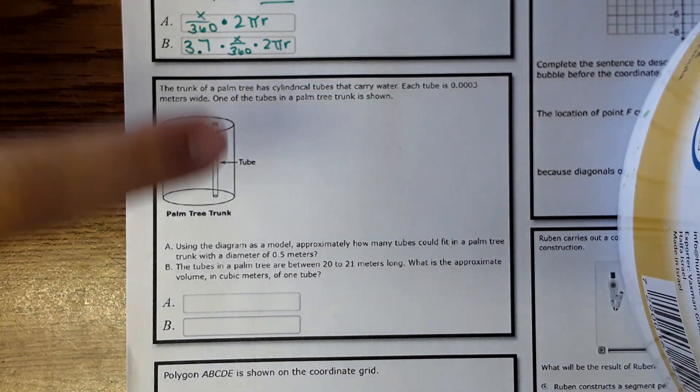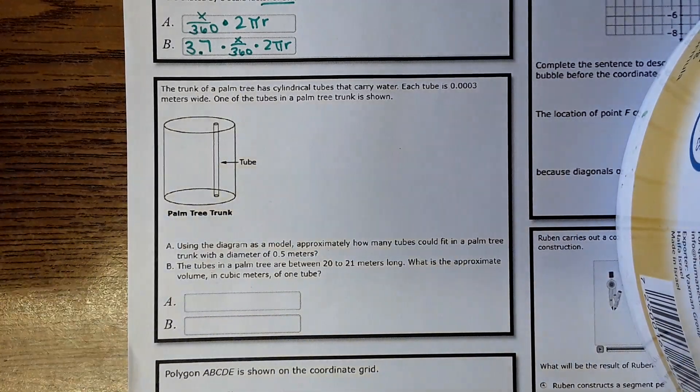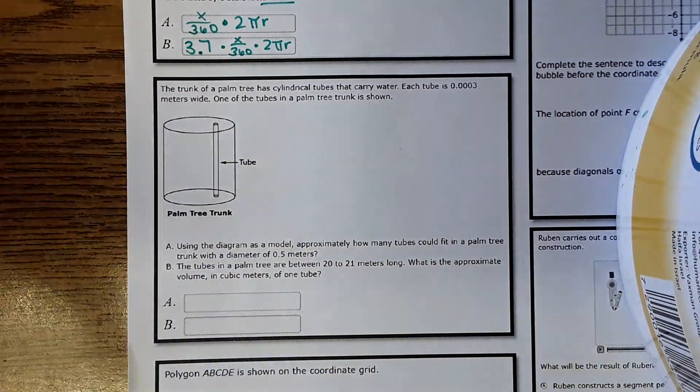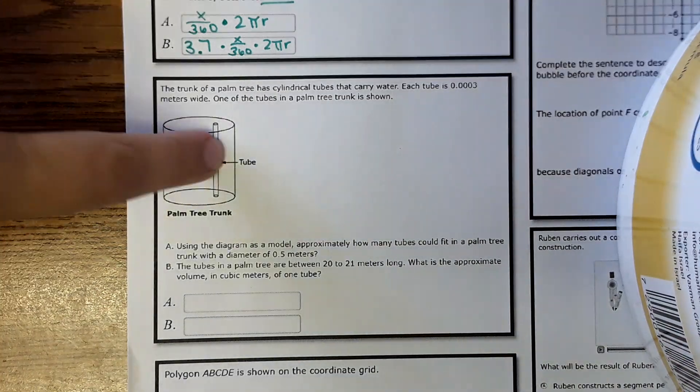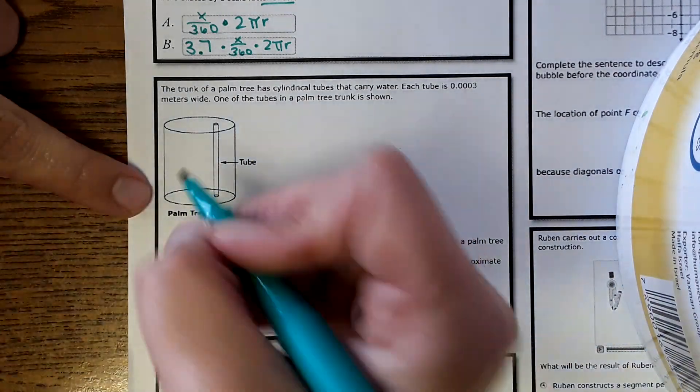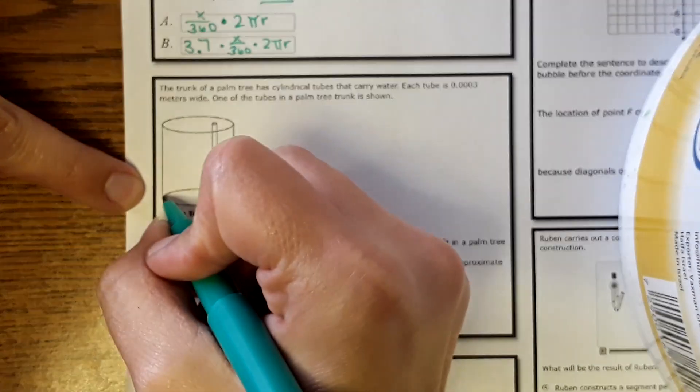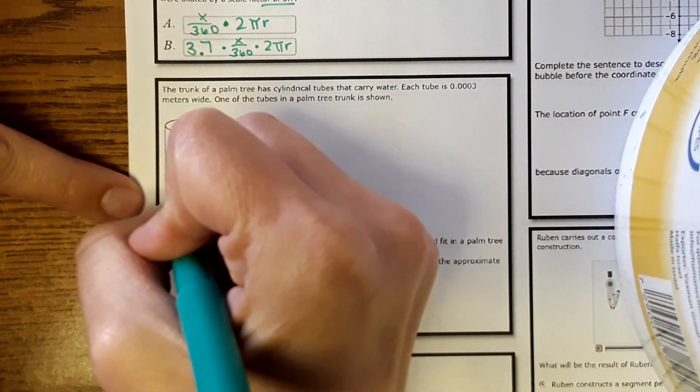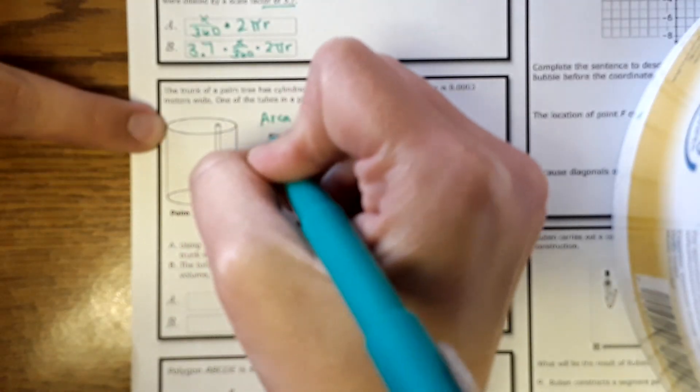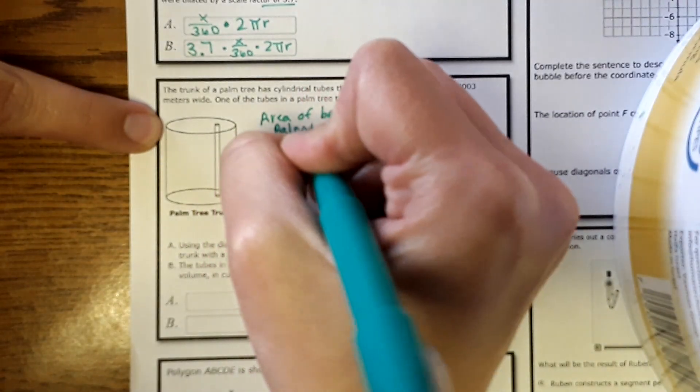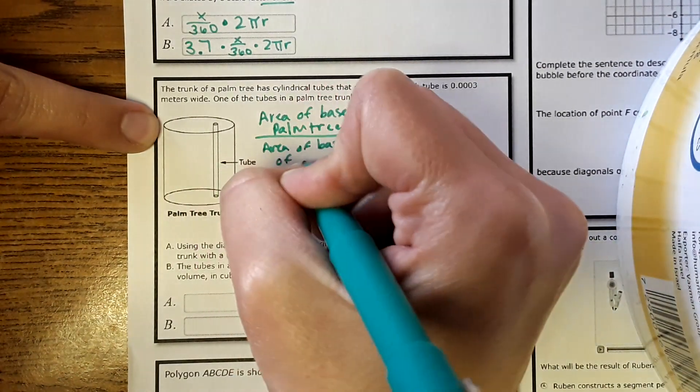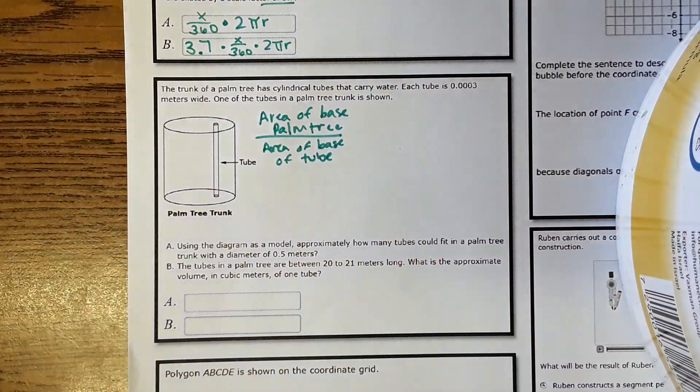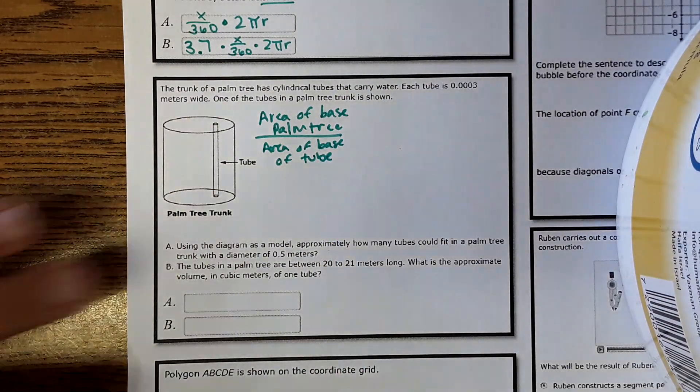So here's the scenario again. This is a palm tree. The larger cylinder is a palm tree, and then it has a tube of the palm tree that takes the water from the bottom of the trunk to the top of the tree. It wants to know how many of these tubes could fit into the trunk of the tree. So we are going to take the base area of the palm tree and divide it by the area of base of the tube. And then that will tell us how many times the tube would fit within that palm tree.